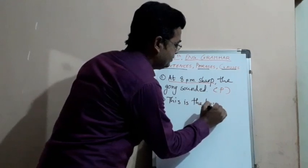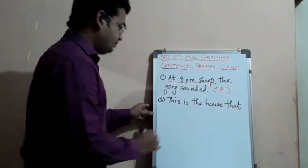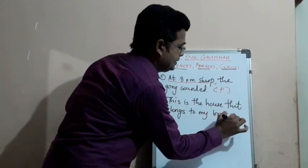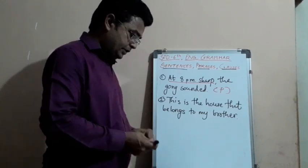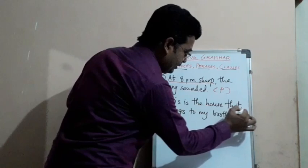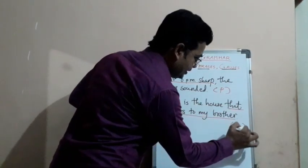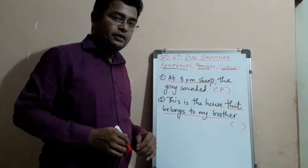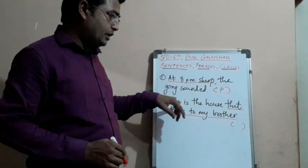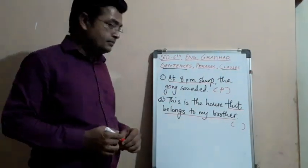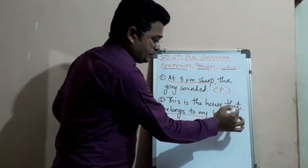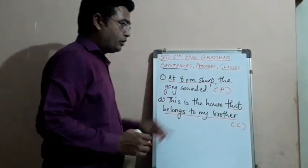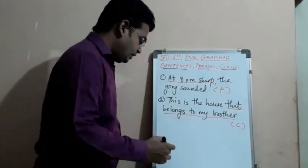Let us see another example: 'This is the house that belongs to my brother.' Here I'll underline the words 'that belongs to my brother.' Is it a group of words? Yes. Does it give a complete sense? 'That belongs to my brother' — but what? It is impossible to understand without 'this is the house,' so it does not give a complete sense. But if you see, it has a subject and predicate. So it falls in the category of a clause. C for clause, P for phrase.